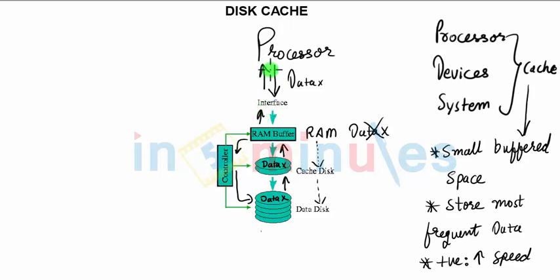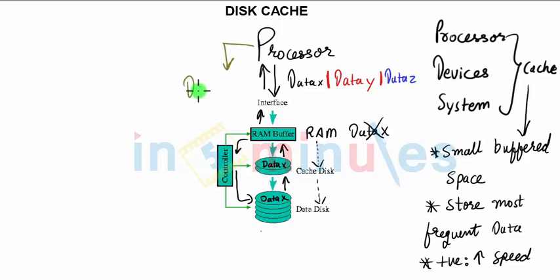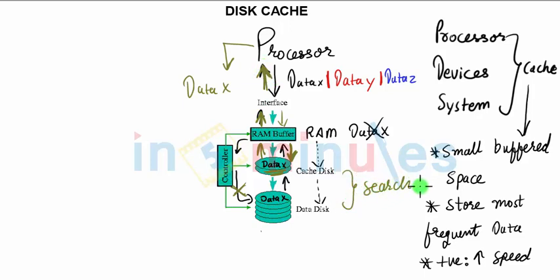Now let's understand the advantage. After data x, suppose we retrieved data y, then data z, and so on. After two or three passes, suppose the processor needs to work with data x again. RAM may no longer have it since RAM is very dynamic. It will go down and ask the cache — and if you're lucky, data x is already cached. In that case, it will not send the request further down; it will directly transfer the data back to RAM and from RAM to the processor. What was saved was the entire search period.